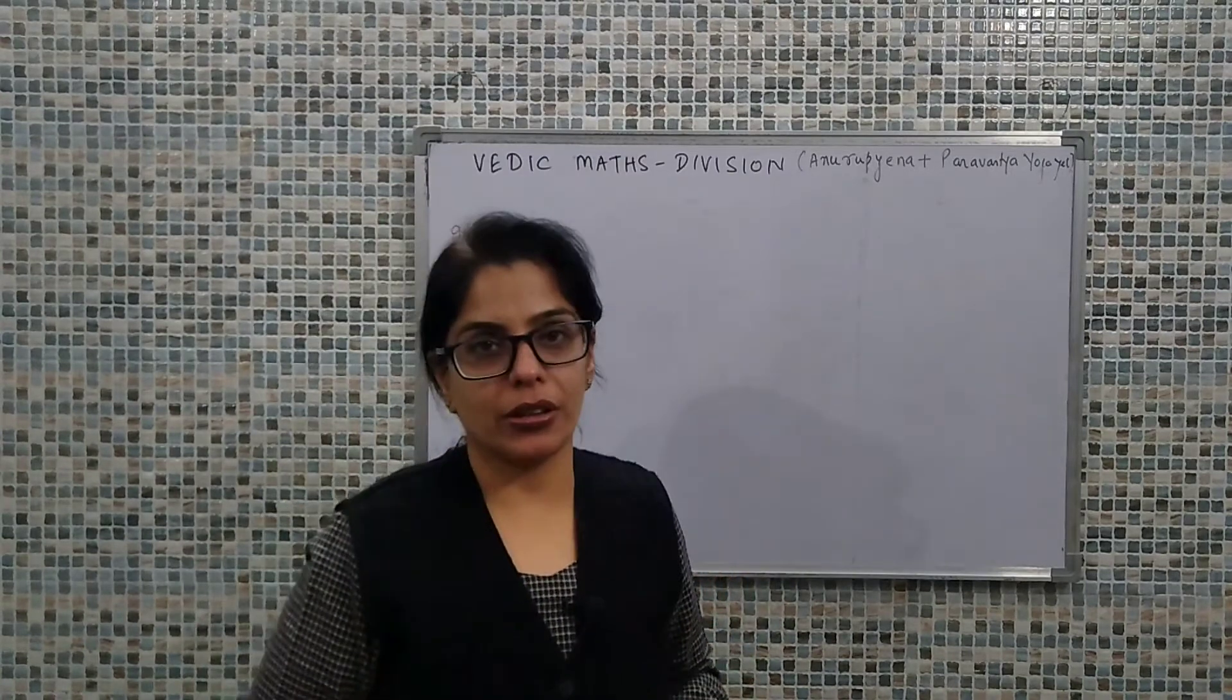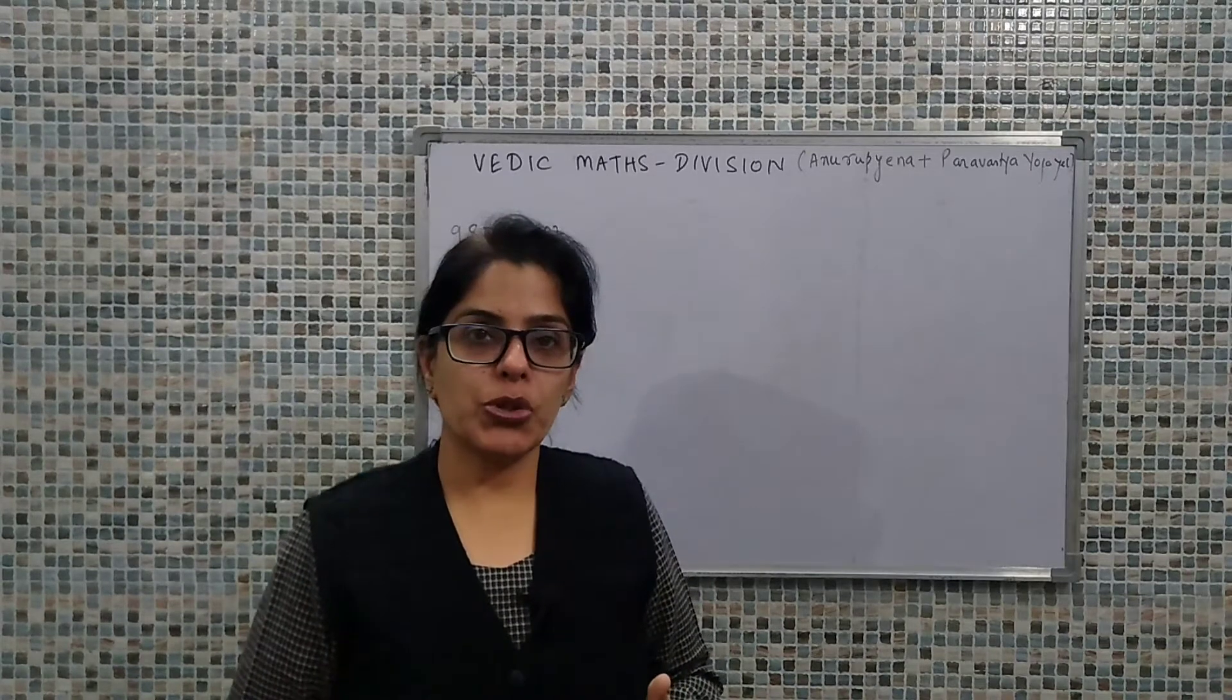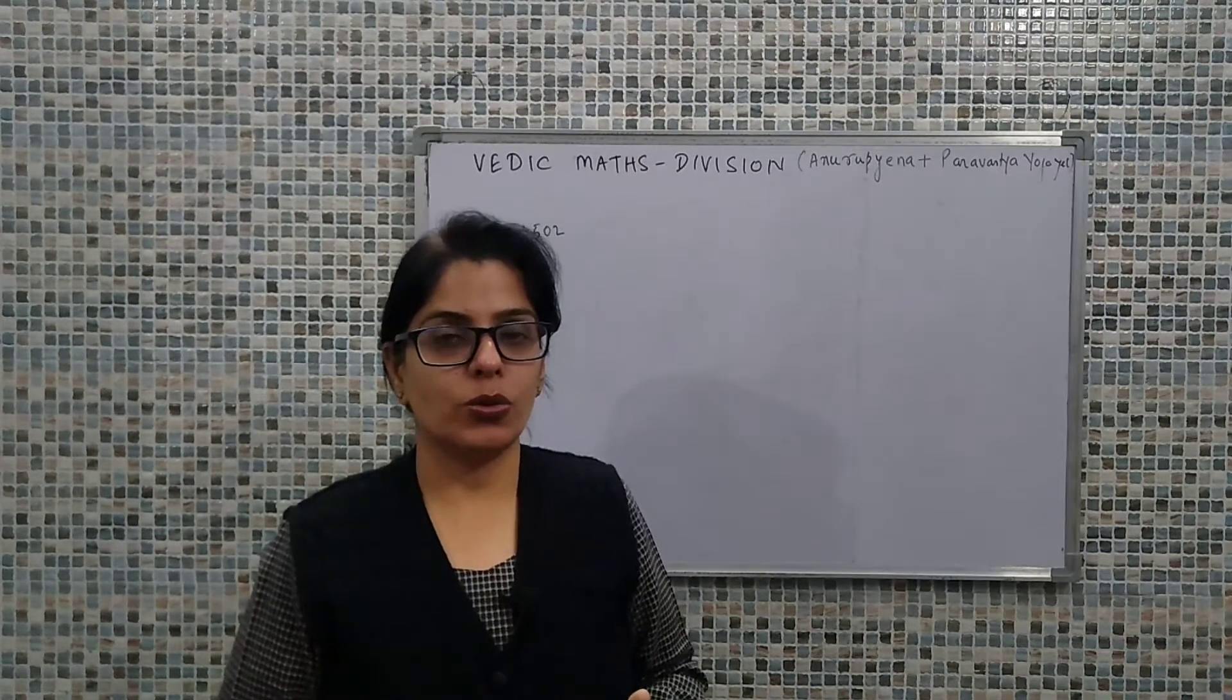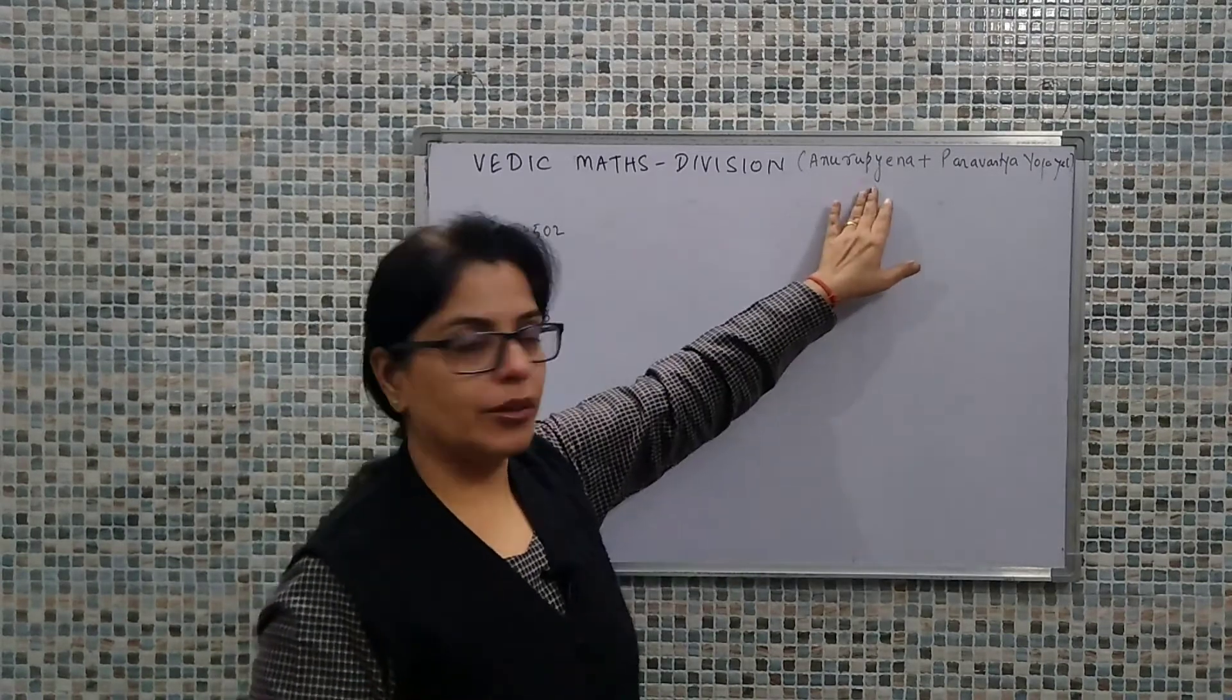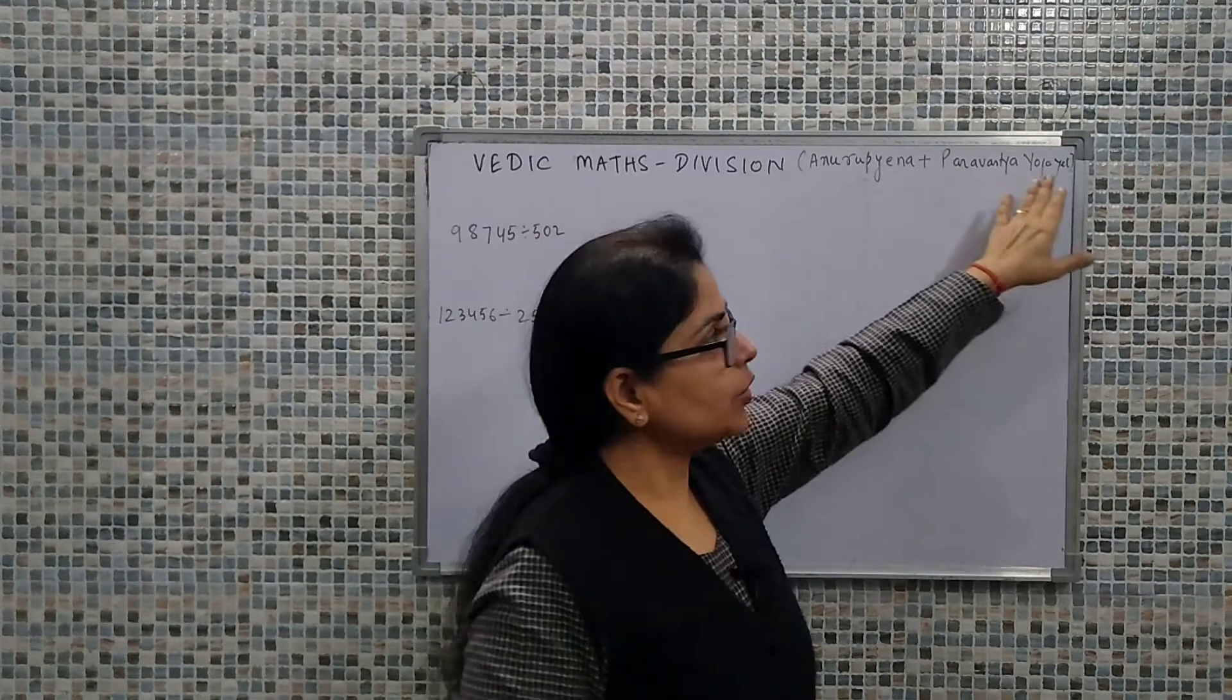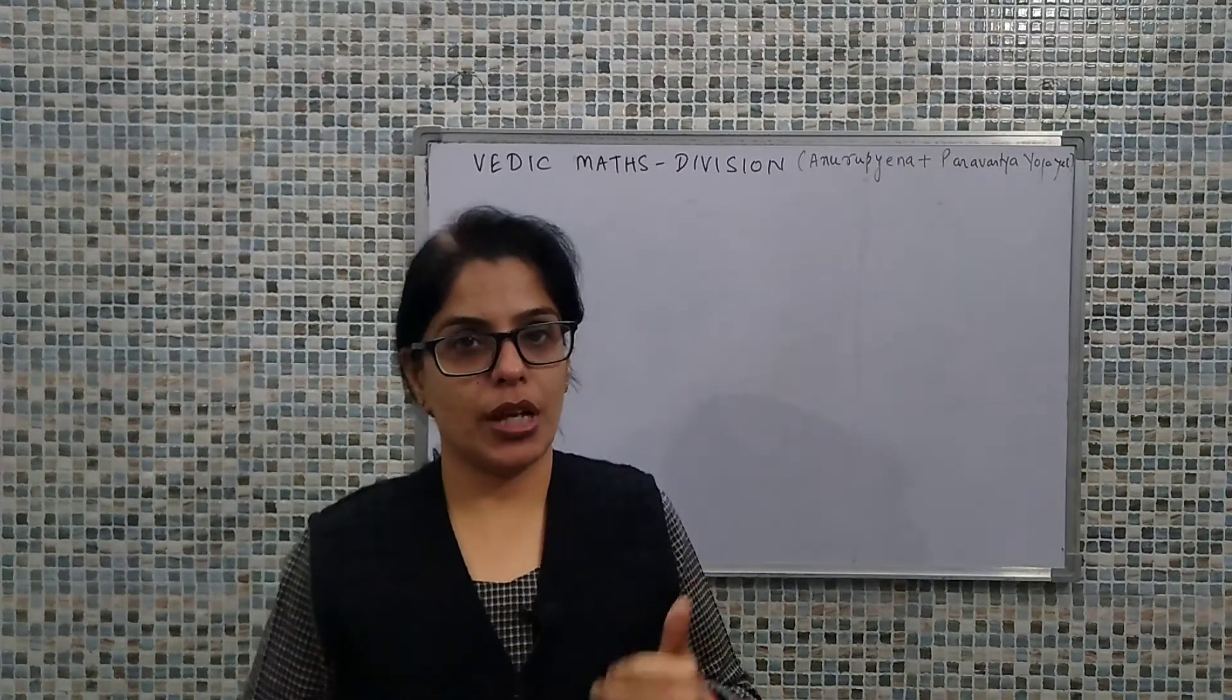Anurupyena means proportionately. If we want to increase or decrease a value, we can define a multiplying factor and that is what Anurupyena defines. Next is Paravartya Yojiyat, which means transpose and apply.